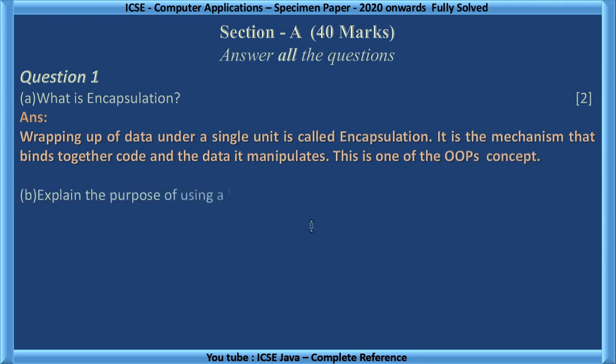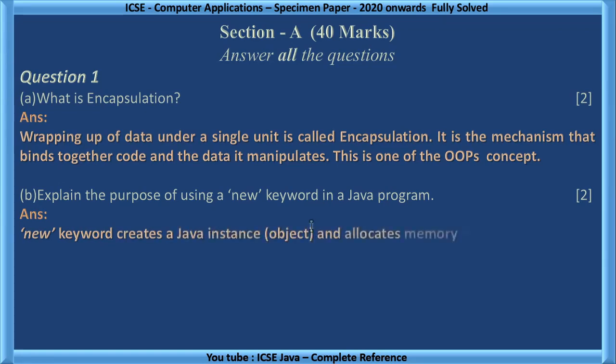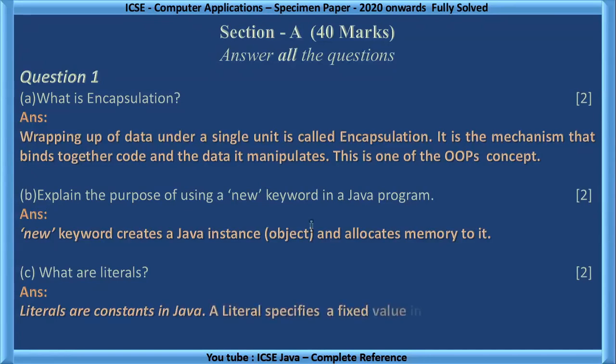Explain the purpose of using a new keyword in a Java program. New keyword creates a Java instance that is object and allocates memory to that object. Question C, what are literals? Literals are constants in Java. A literal specifies a fixed value in a program.